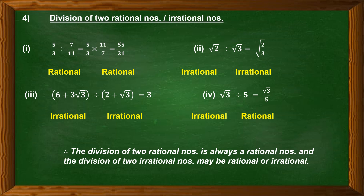Now let us study division of rational and irrational numbers. For two rational numbers: (5 by 3) divided by (7 by 11). Division means multiply by the reciprocal, so 5 by 3 into 11 by 7, giving 55 by 21 — a rational number. The division of two rational numbers always gives a rational number.